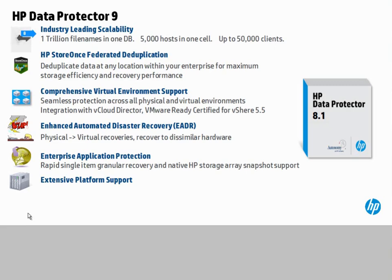Some of the top points about Data Protector 9, our latest release, are listed here. The first is leading scalability — Data Protector scales to larger organizations and environments than any other backup solution available on the marketplace today. The fundamental unit of management is what we call a cell. You can have up to a trillion file names in one cell's database and up to 5,000 different servers or hosts involved in a cell. Cells can be combined to provide an even larger administrative domain, up to 50,000 clients. Data Protector also has an absolutely unique approach to deduplication that we call federated deduplication, which I'll discuss later in the webinar.